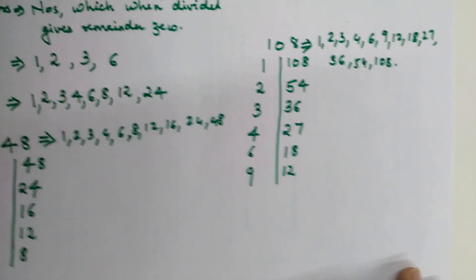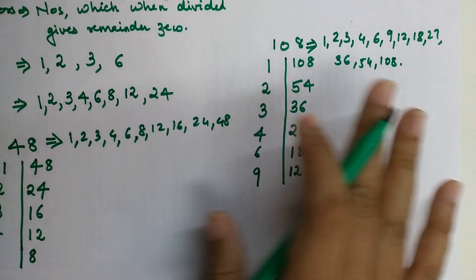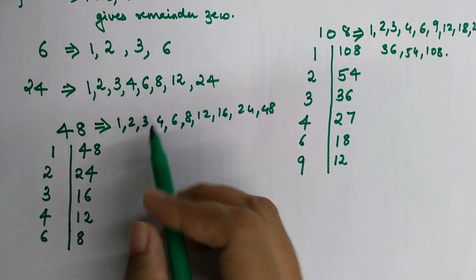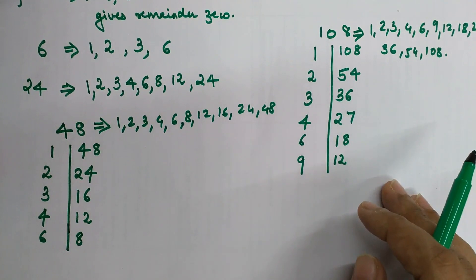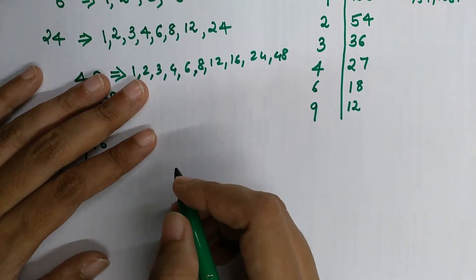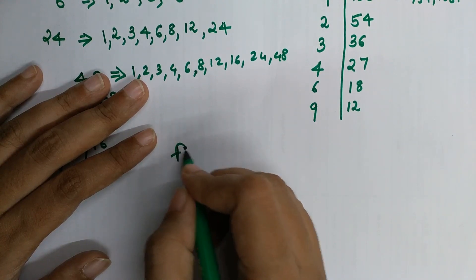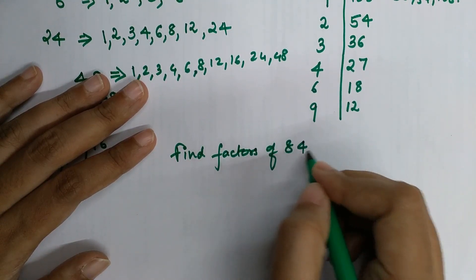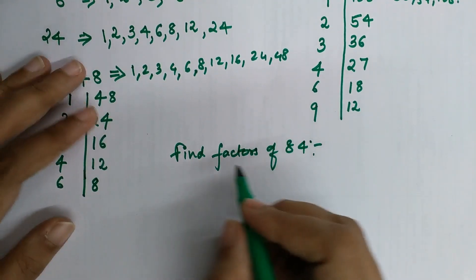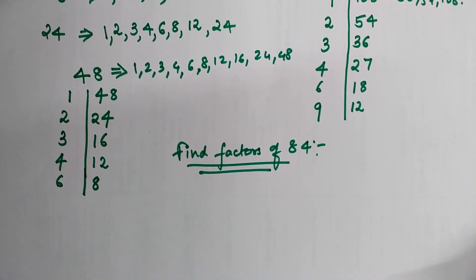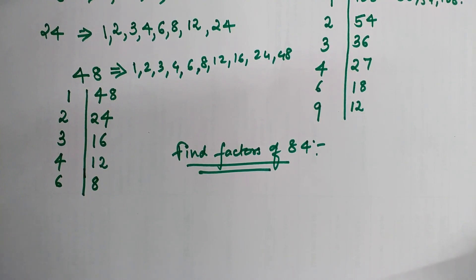In this way you can find the factors of any number in half the time. This method is much faster than the traditional approach. Now, as promised, here is your question: find the factors of 84 and write your answers in the comment section. Don't forget to like this video and share it with anyone who might find it helpful. I'll see you in the next one — thank you!